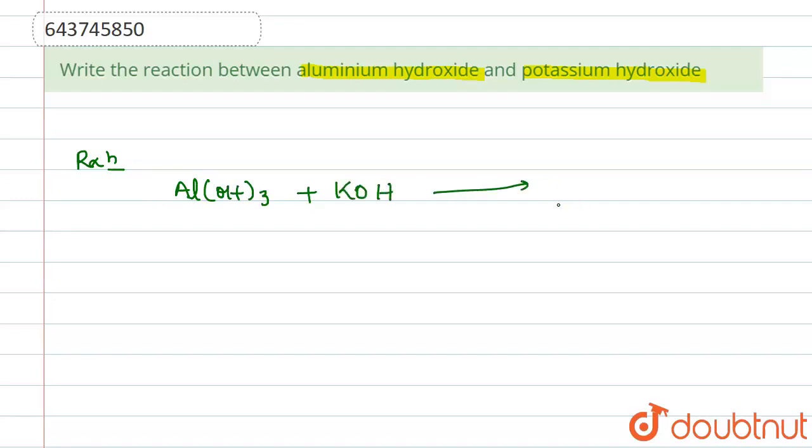When they react, it will give KAlO₂ plus H₂O. If we balance the reaction, here we have 2H₂O, so the reaction is balanced. By looking at this reaction, we can say that: